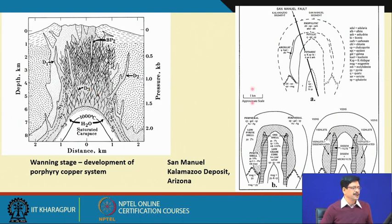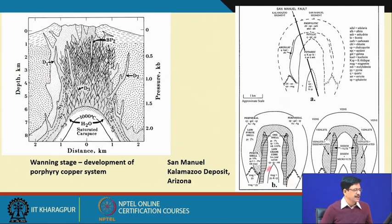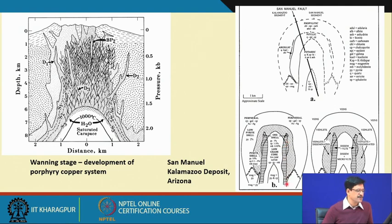What results from this process can be schematically shown on this diagram, taken from the San Manuel-Kalamazoo deposit in Arizona. The core represents the small plug-like body that is emplaced. Surrounding it is a zone of low-grade mineralization containing chalcopyrite, pyrite, and molybdenite. Then there is a rich ore shell containing the maximum concentration of copper — the richest part of the ore body — surrounded again by a shell where pyrite is rich but chalcopyrite is poor, and the mineralization dies out into country rock.